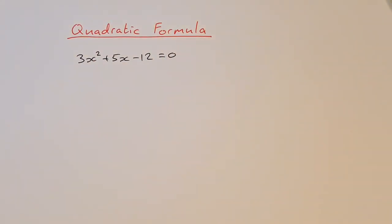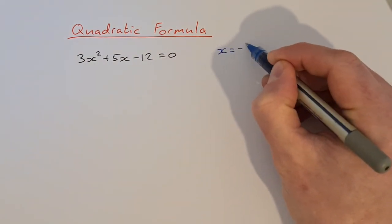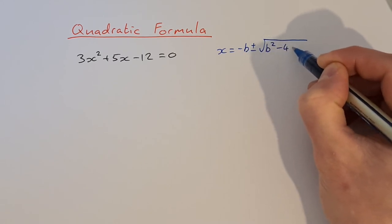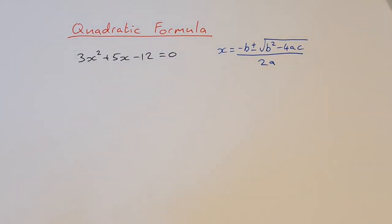The last method I'm going to show you is the quadratic formula. The quadratic formula is: x equals minus b plus and minus the square root of b squared minus 4ac, all over 2a. I like this one because it will work for any quadratic equation, even one that isn't easily factorized, or one that has complex roots.